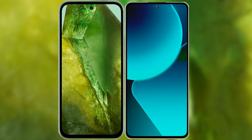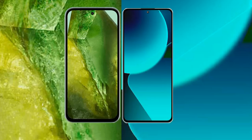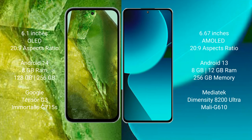I will compare the new Google Pixel 8a with Xiaomi 13T. Google Pixel 8a comes with a 6.1-inch OLED display at 60 to 120Hz. Xiaomi 13T has a 6.67-inch AMOLED display, also at 60 to 120Hz.